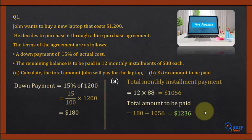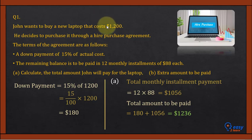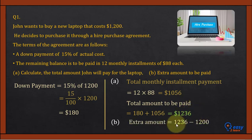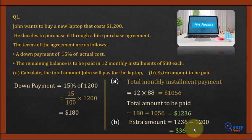At the end of the plan, John has to pay $1236. The actual cost of the laptop is $1200, but he pays $1236, so the extra amount is $1236 − $1200 = $36. He has to pay an extra $36.